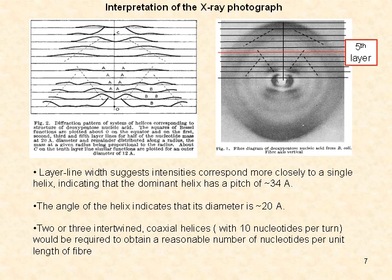Layer line widths suggest intensities correspond more closely to a single helix, indicating that the dominant helix has a pitch of 34 angstroms. The angle of the helix indicates that its diameter is 20 angstroms. Considering these observations, two or three intertwined coaxial helices with 10 nucleotides per turn would be required to obtain a reasonable number of nucleotides per unit length of fiber.